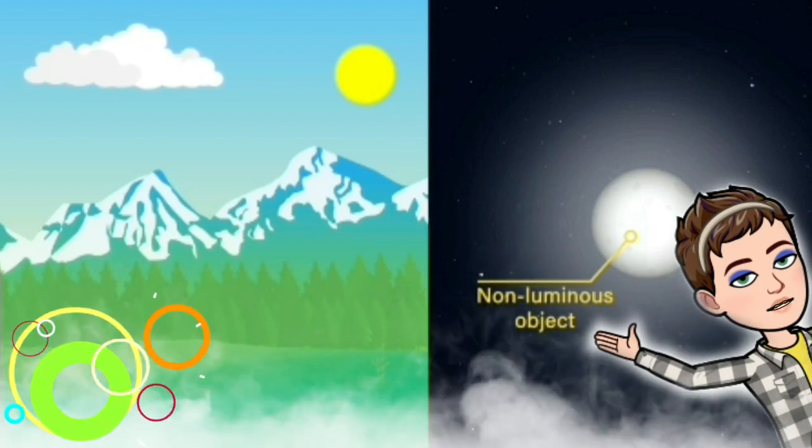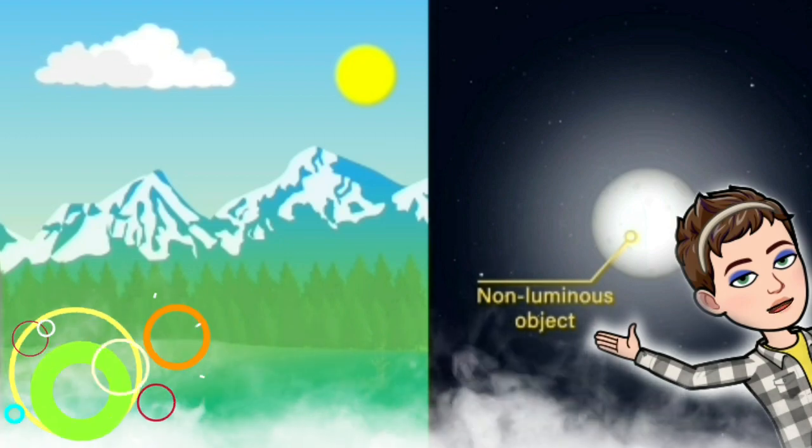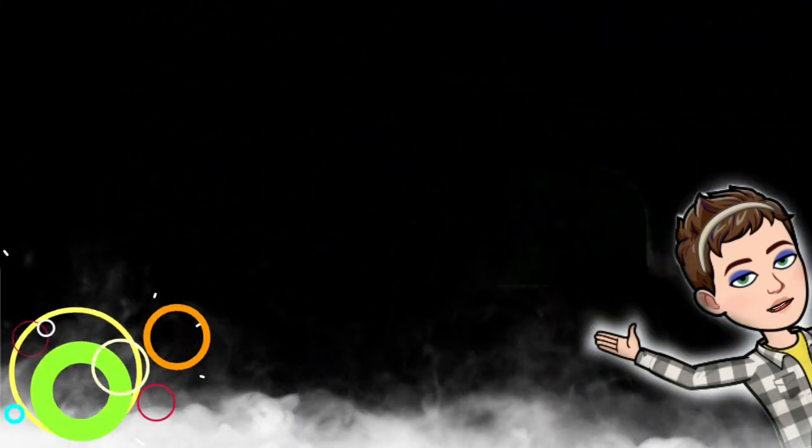As I've said earlier, most of the objects that we come across in our daily life are non-luminous. We only see them because they reflect light.